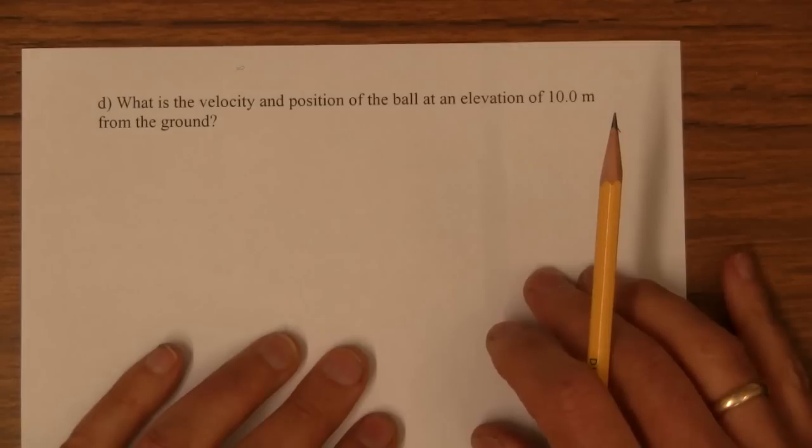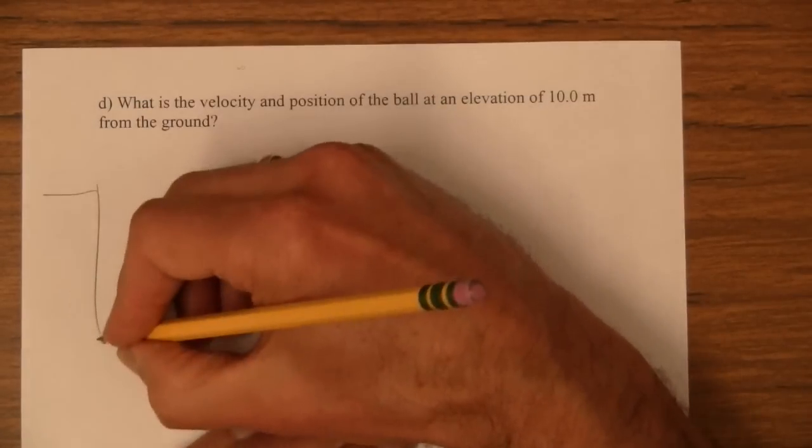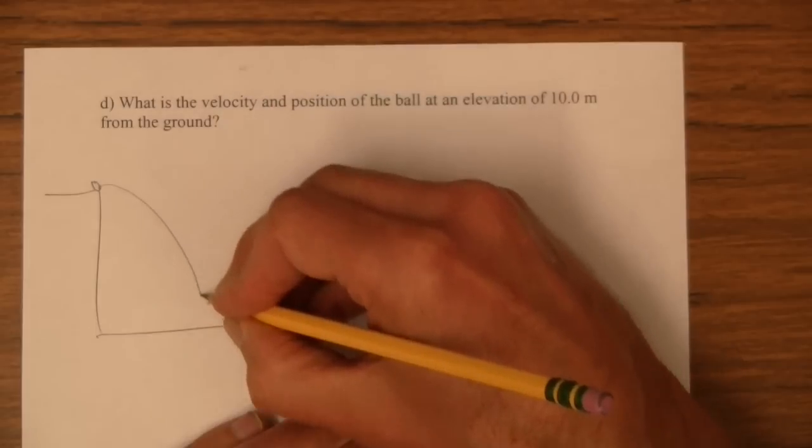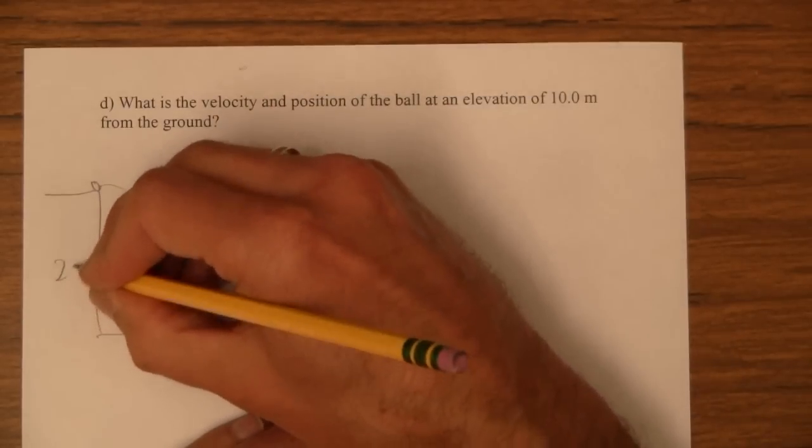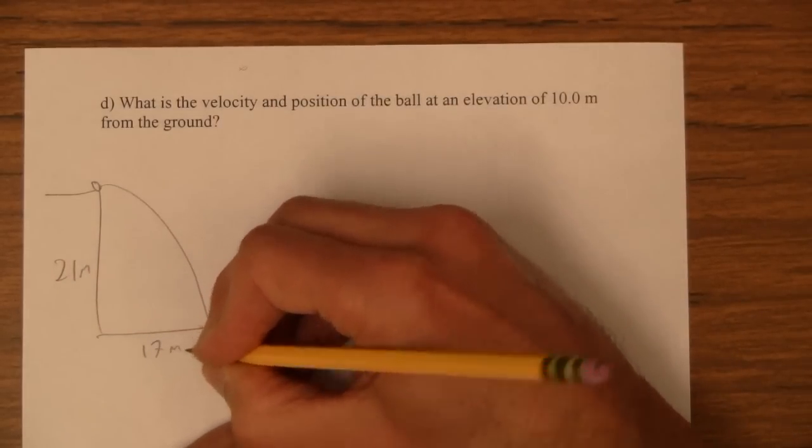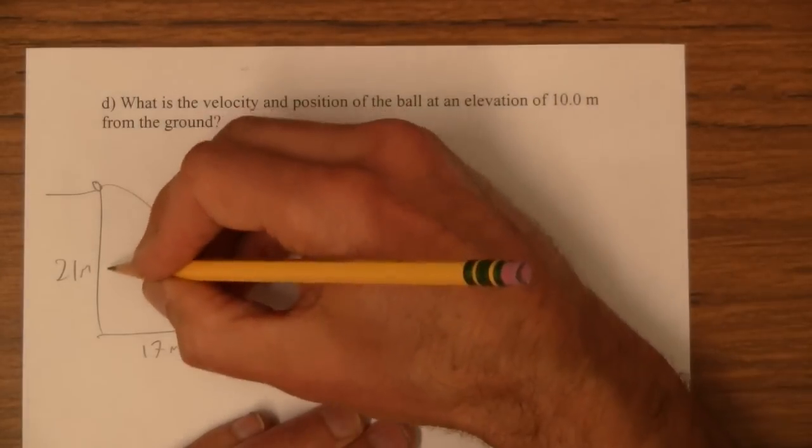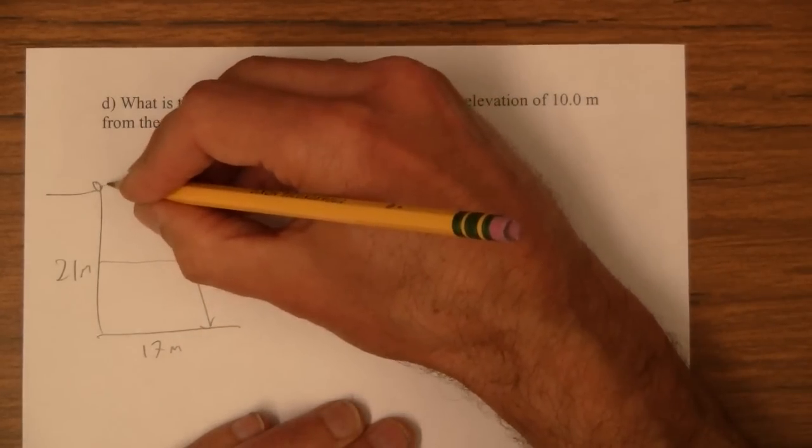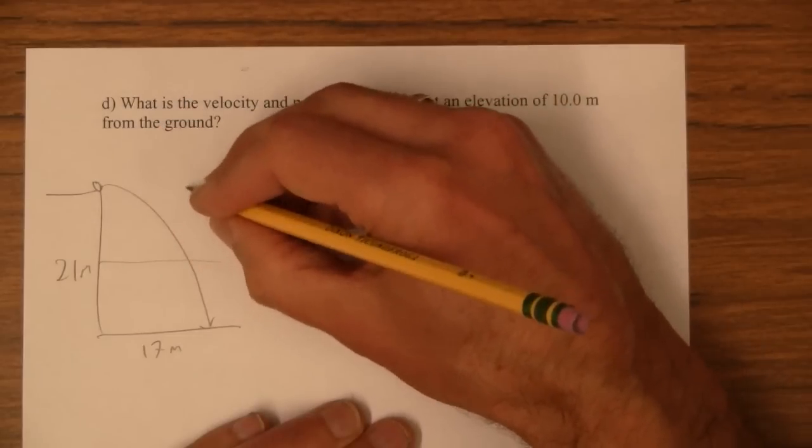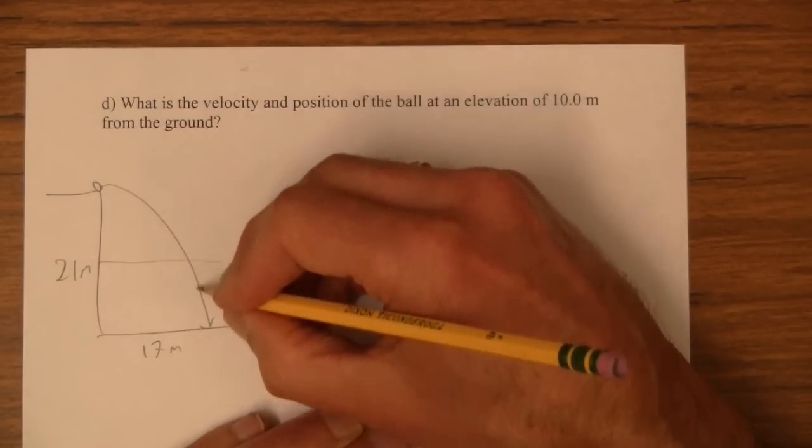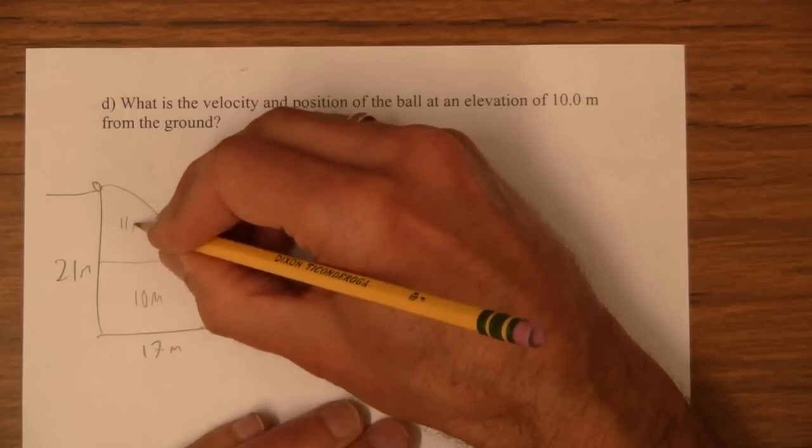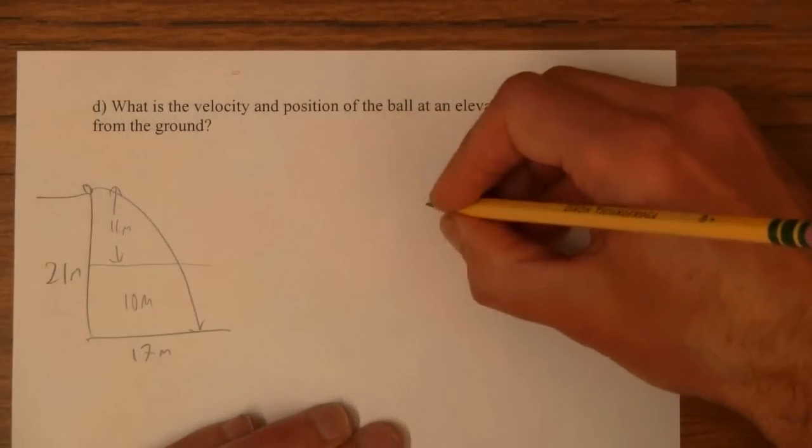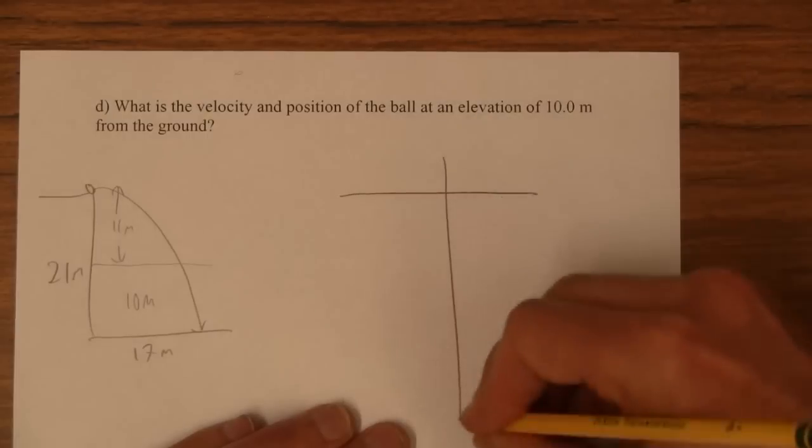Well that's kind of a tricky thing to ask because here's this ball and it's going to go down 21 meters and go over 17 meters. So when we say it's 10 meters above the ground what we really need to put in our little table is that we've gone down 11 meters. If this is 10 meters we've gone down 11 meters. That's sort of the tricky thing but other than that this is not terribly tricky.